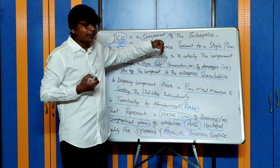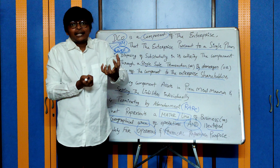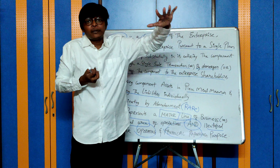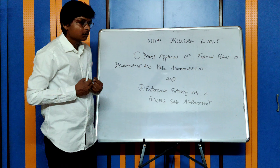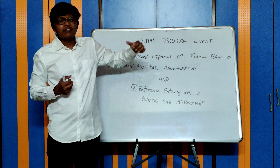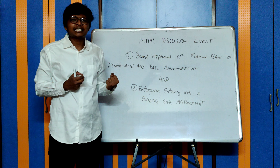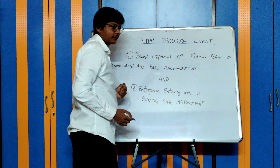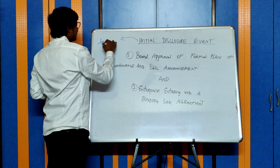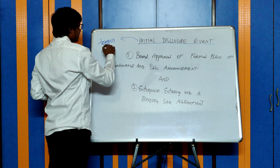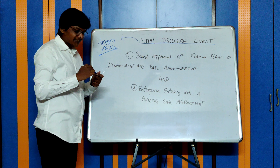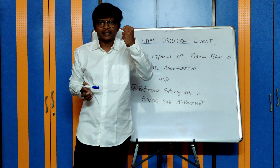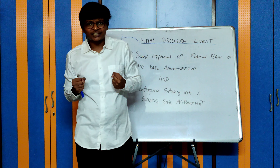Now let us see what happens once a company decides to sell a component of a business — how they take a decision and how to present it in financial statements. Let us see what is an initial disclosure event, which will trigger AS24 for the presentation. Before we see this, let me take a small example: are these discontinuing operations or not?